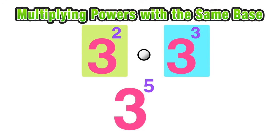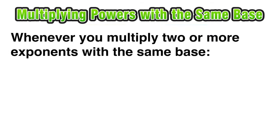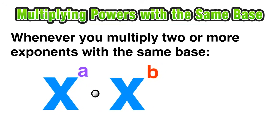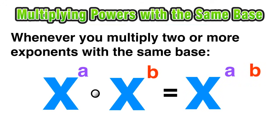The question is: how did we use those exponents of 2 and 3 with the same base and end up with a 5 in our simplified answer? You may have noticed that 5 is equal to the sum of 2 and 3. This turns out to be one of the laws of exponents, which says that whenever you multiply two or more exponents with the same base — for instance, x raised to the power of a times x raised to the power of b — you take those two exponents and add them together.